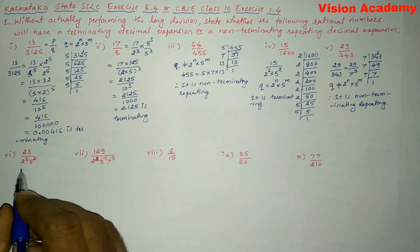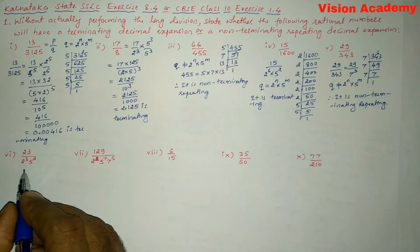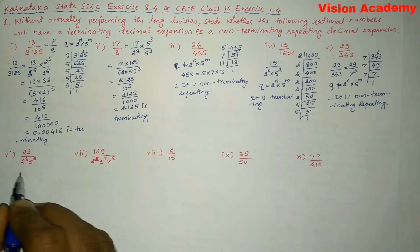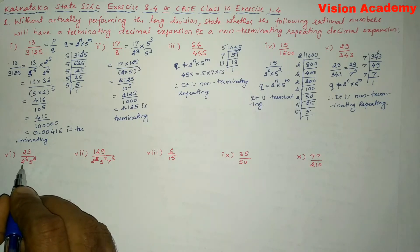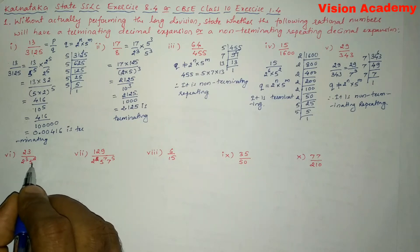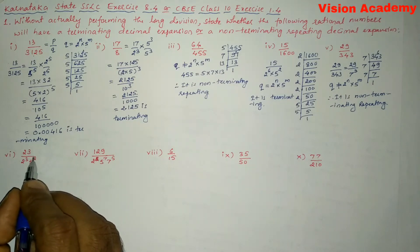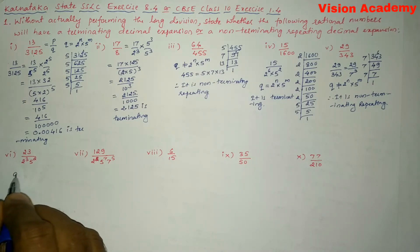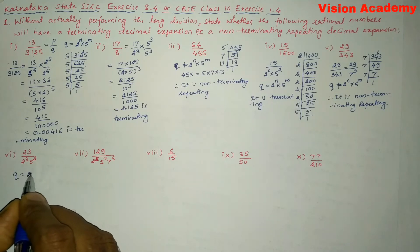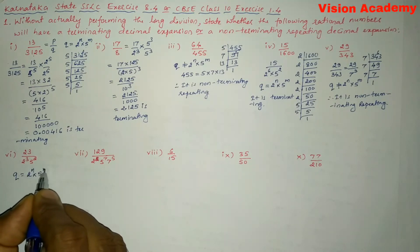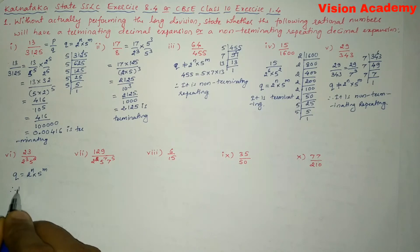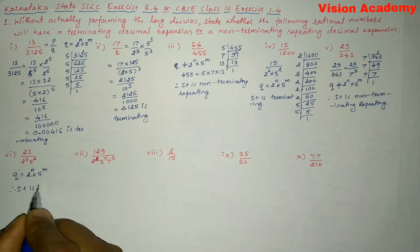Roman number six: here they have directly given the denominator in the form of 2 to the power 3 into 5 to the power 2. Since denominator Q is in the form 2 to the power n into 5 to the power m, it is terminating.